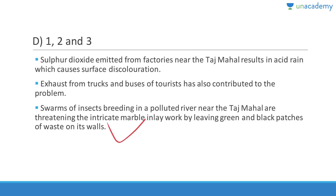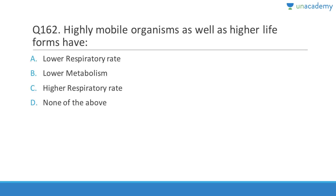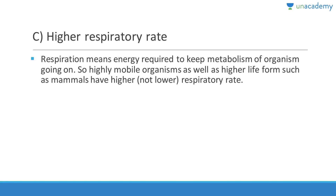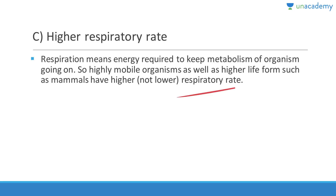Highly mobile organisms as well as higher life forms such as mammals have a higher respiratory rate. Respiration provides the energy required to keep metabolism going; it leads to production of ATP, the cell's currency. Highly mobile organisms require more energy and therefore have a higher — not lower — respiratory rate.